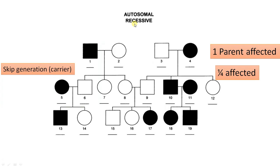Looking at the pedigree chart for autosomal recessive: the affected father in generation one, but no disorder visible in generation two — indicating a recessive trait. With one parent affected, one out of four offspring (out of individuals 9, 10, and 12) is affected. If both parents are affected (homozygous recessive), all offspring will also get the disorder. This inheritance pattern often skips generations.